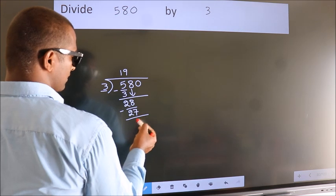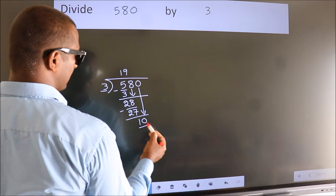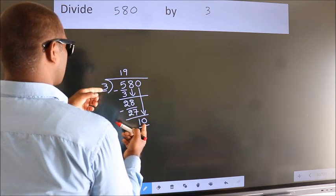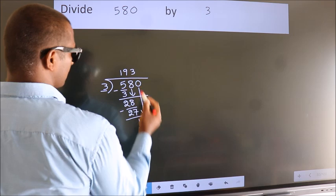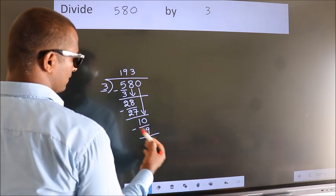After this, bring down the beside number. So, 0 down. So, 10. A number close to 10 in 3 table is 3 3s 9. Now, we subtract. We get 1.